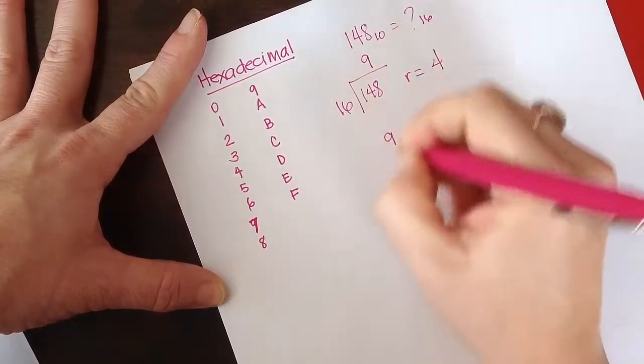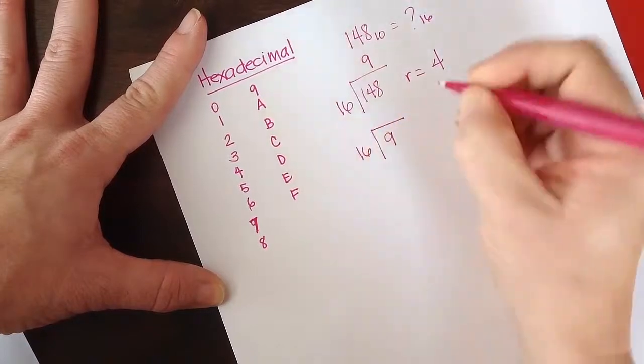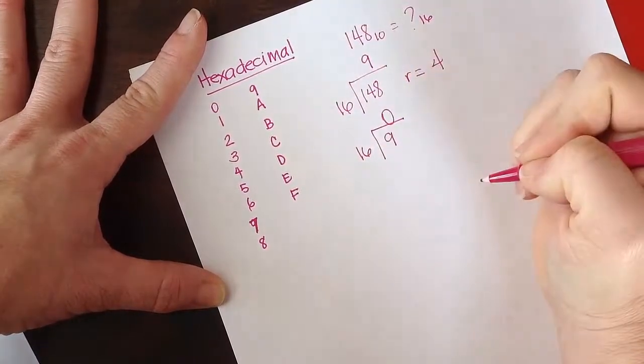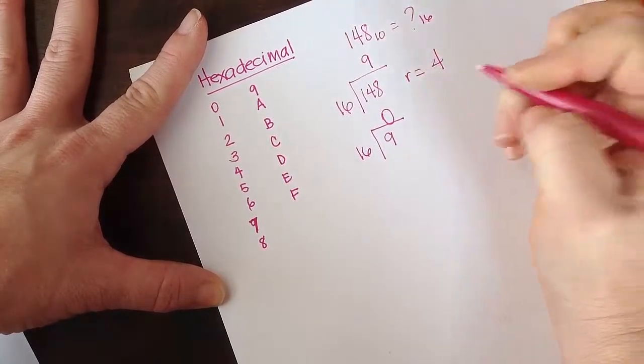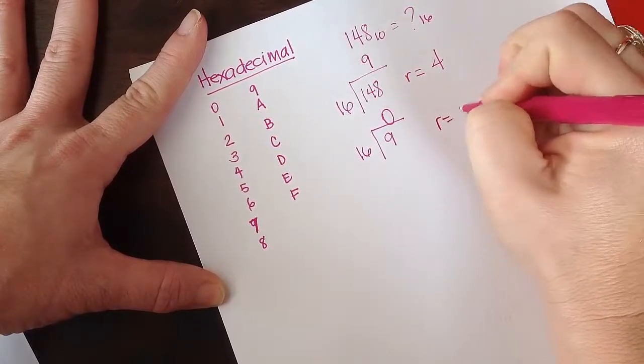And then I do 9, take the number on top, divide by 16. It's going to go in 0 times. All right, and then I'm going to have a remainder of 9.